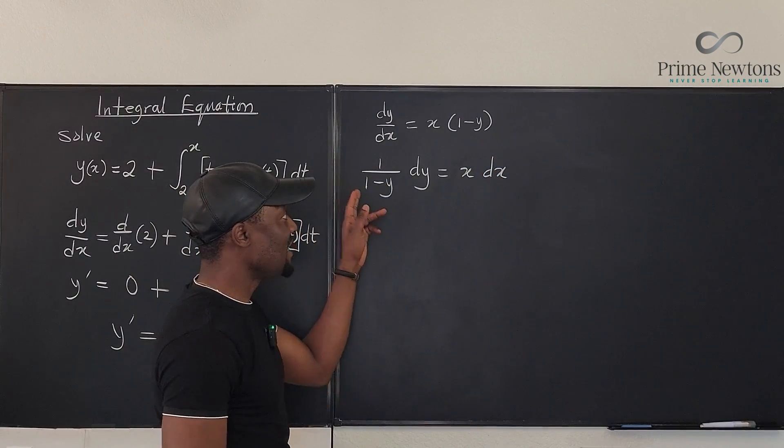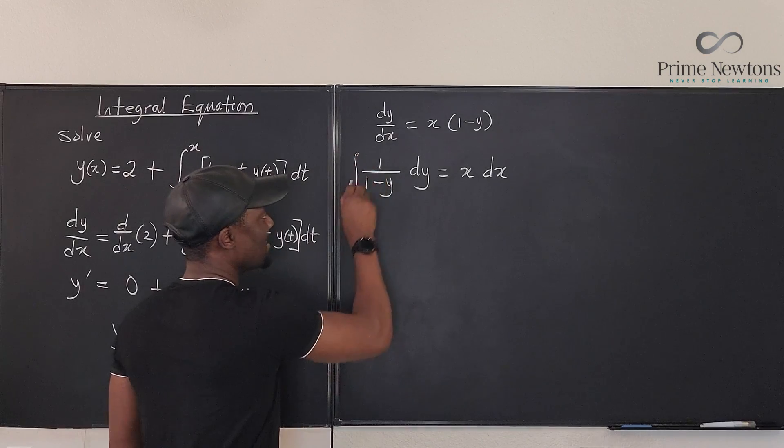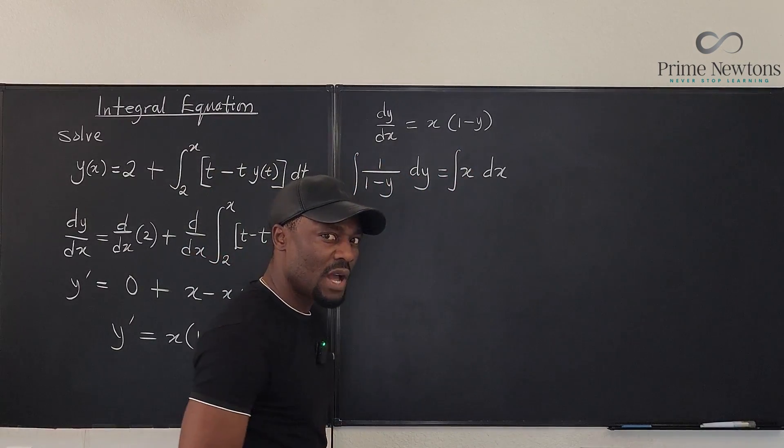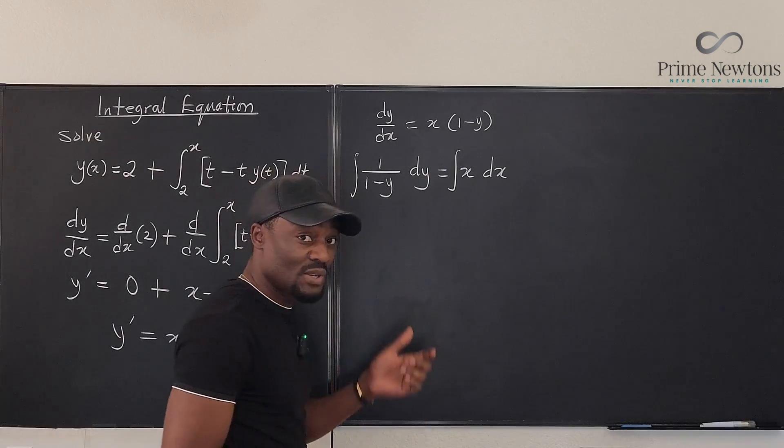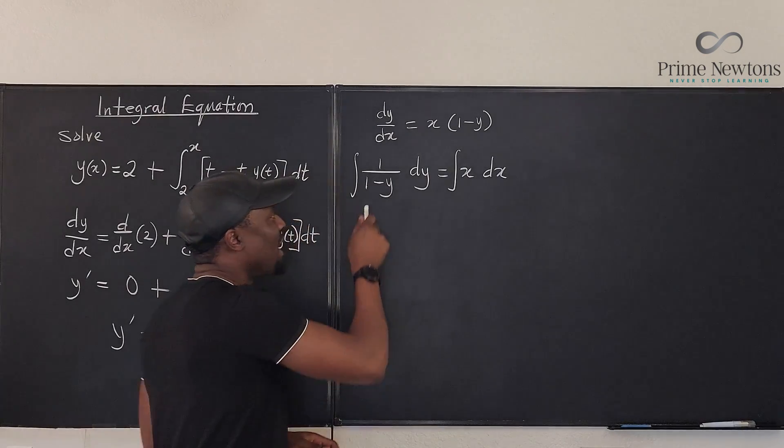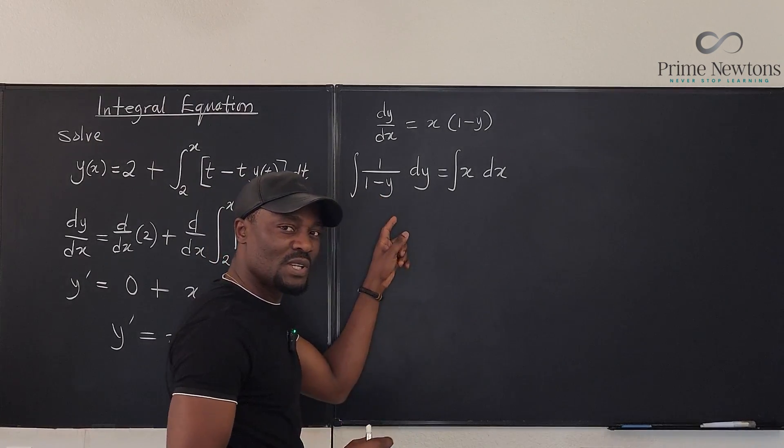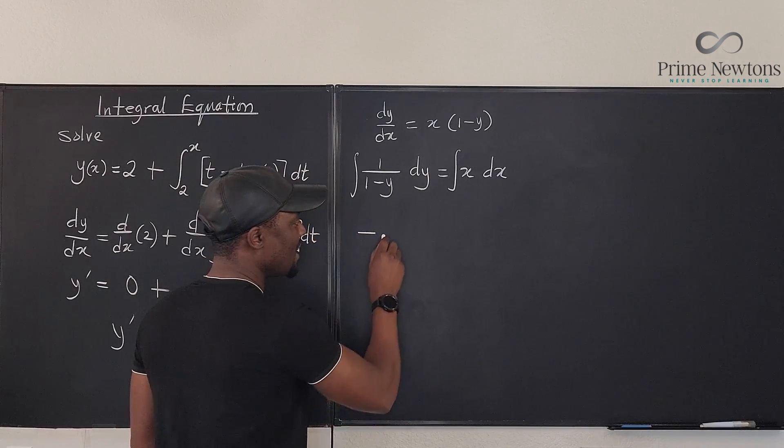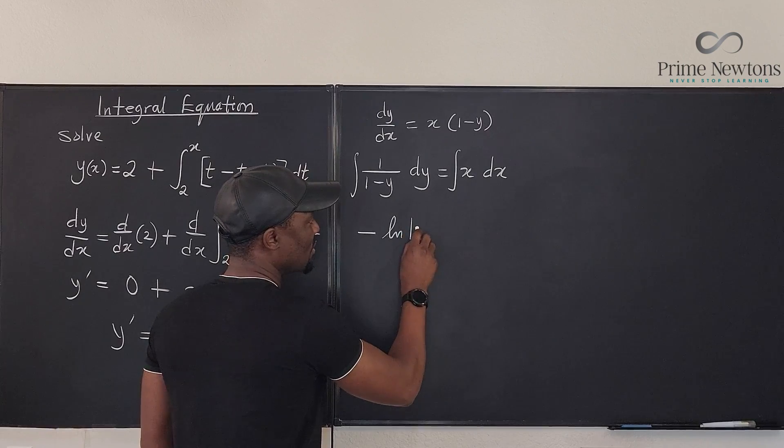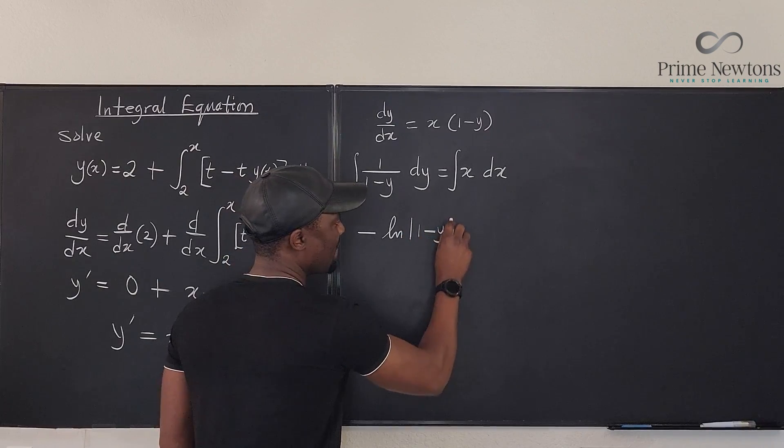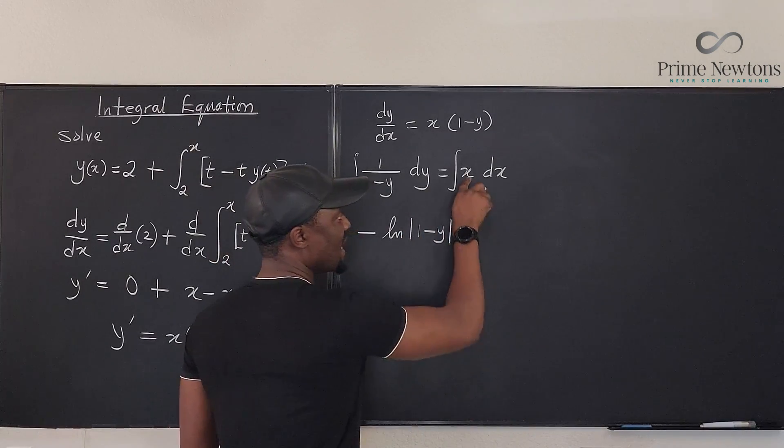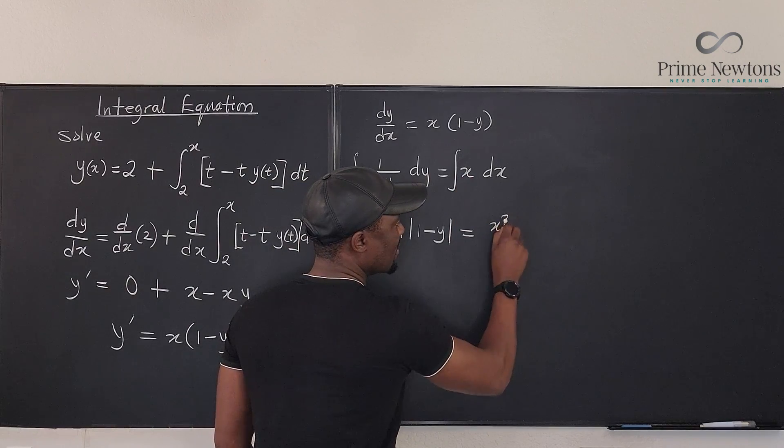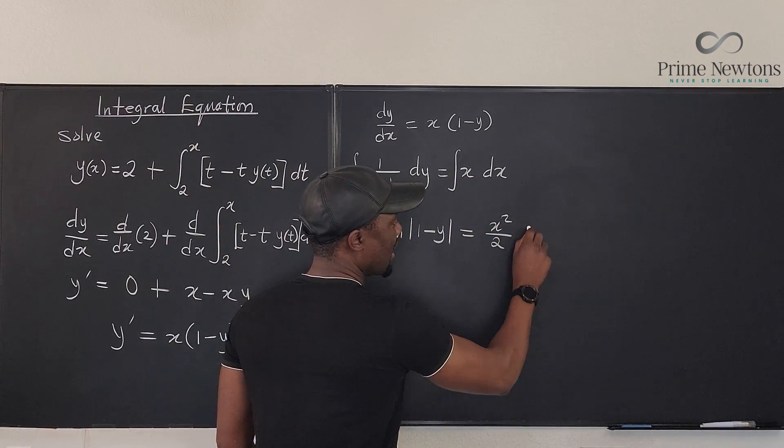And now I can integrate both sides. I know how to integrate 1/(1 - y). It's going to be natural log of the absolute value of (1 - y). But during the u substitution here, you're going to get a negative. So it's going to be negative ln of the absolute value of (1 - y). And on the right hand side, we're just going to integrate x. We're going to get x squared over 2, and we have plus c.